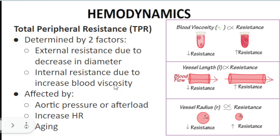The second factor affecting total peripheral resistance is blood viscosity — the thickness of blood. Thin blood has less resistance, while thick blood with many solutes creates greater resistance. Several additional factors affect TPR: aging causes loss of vessel elasticity and vessels become stiffer, increasing resistance; increasing heart rate also increases resistance; and higher aortic pressure or afterload increases resistance.